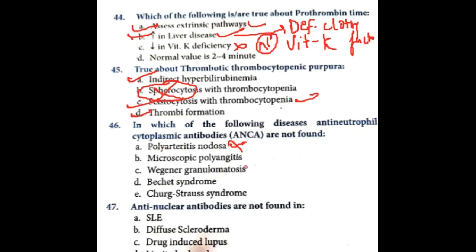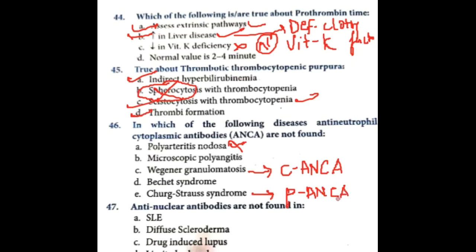Anti-neutrophilic cytoplasmic antibodies are found in Wegener's granulomatosis — you will see C-ANCA. In Churg-Strauss disease you will also see P-ANCA. ANCA is seen in Churg-Strauss disease.